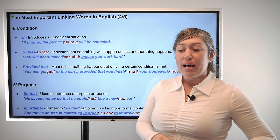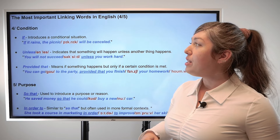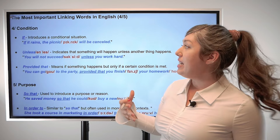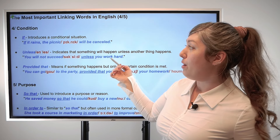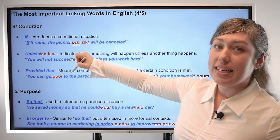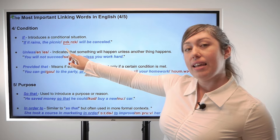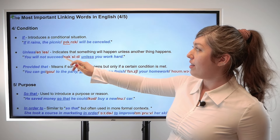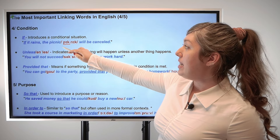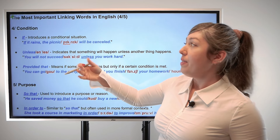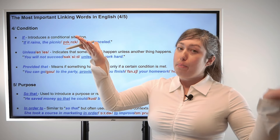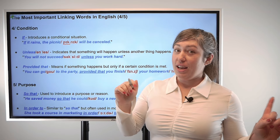The next important linking words are linking words of condition. We have 'if,' which introduces a conditional situation. For example, if it rains, the picnic will be cancelled. So if we have one thing, then we have another: if there's rain, the picnic is cancelled; if there's no rain, the picnic's not cancelled.